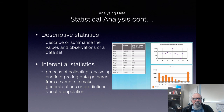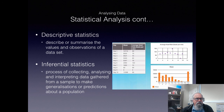We have a couple of different types of statistics we can gather. Descriptive statistics describe or summarize the values and observations of a data set. Inferential statistics involve the process of collecting, analyzing, and interpreting data gathered from a sample to make generalizations or predictions about a population — and this one is probably of greatest interest because we can start to make decisions based on the past that may happen in the future.